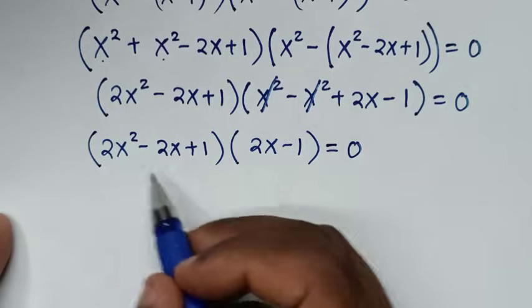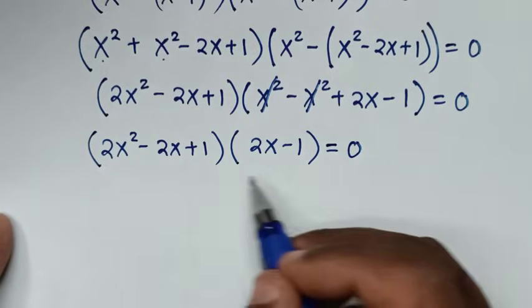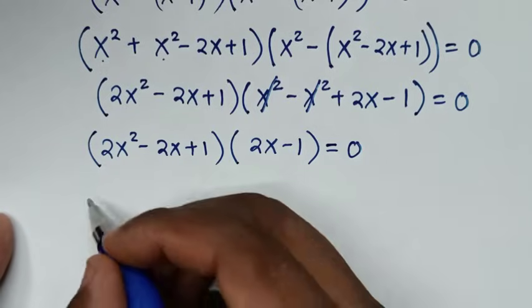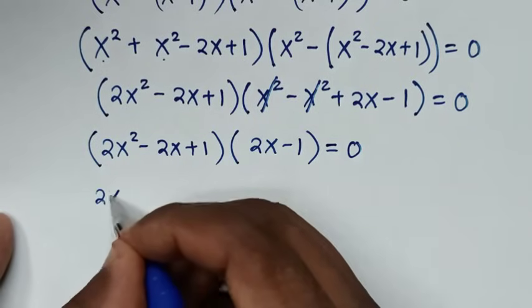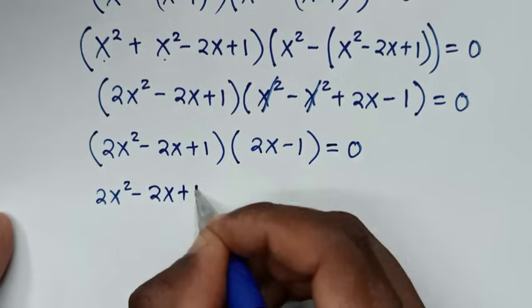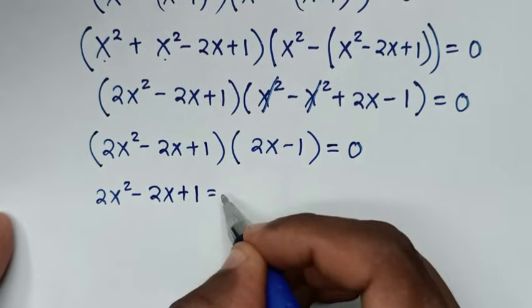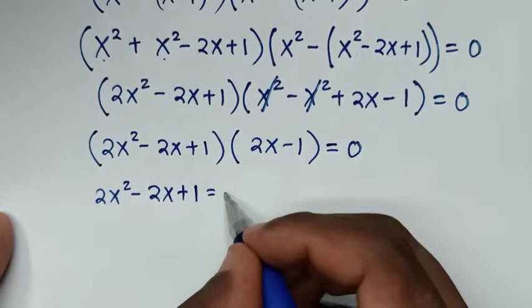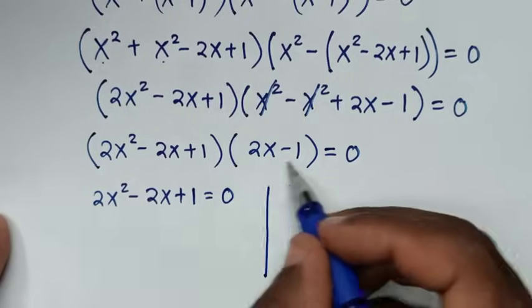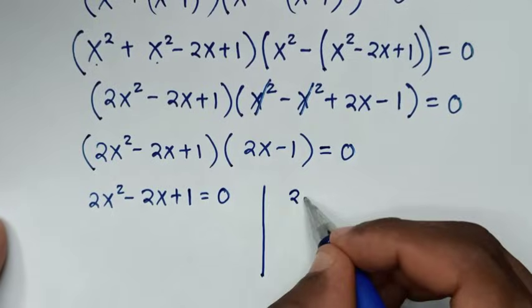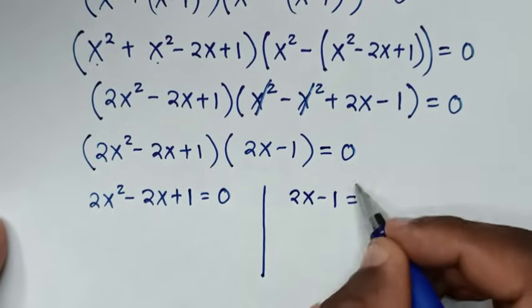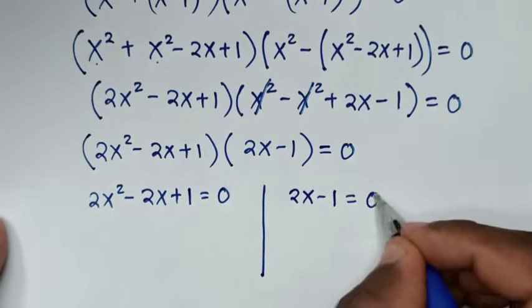From here we have two solutions. The first solution is 2x squared minus 2x plus 1 equals 0, and the second solution is 2x minus 1 equals 0.